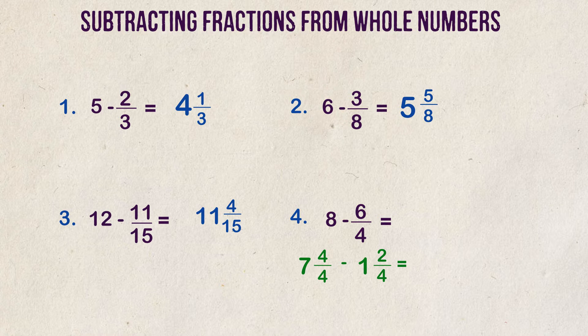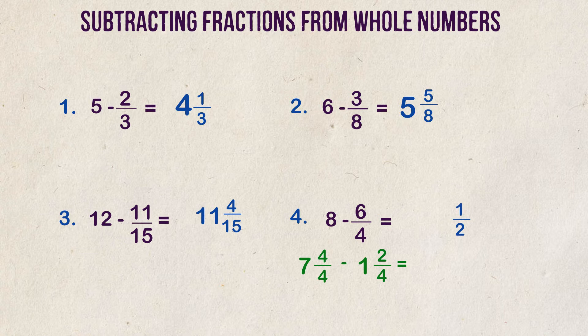We now have two mixed numbers that we can subtract. Looking at the proper fractions first, you subtract the numerators and get 2 fourths, which we know can be simplified down to 1 half. We subtract the whole numbers, 7 minus 1, and we get 6. 6 and a half is our answer.